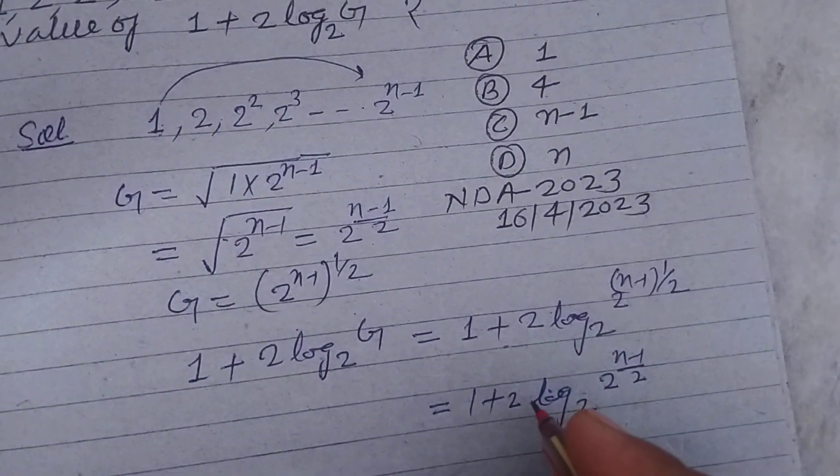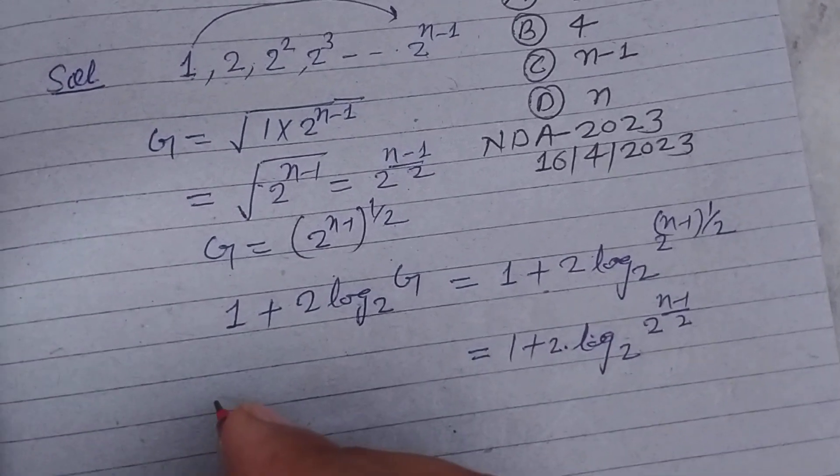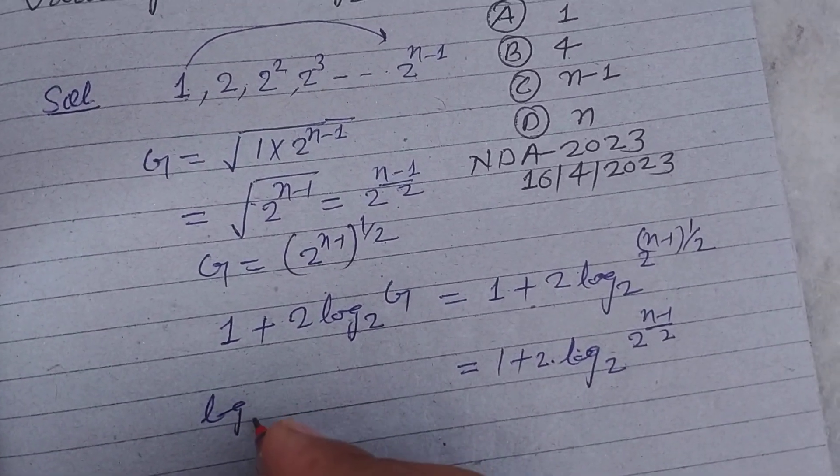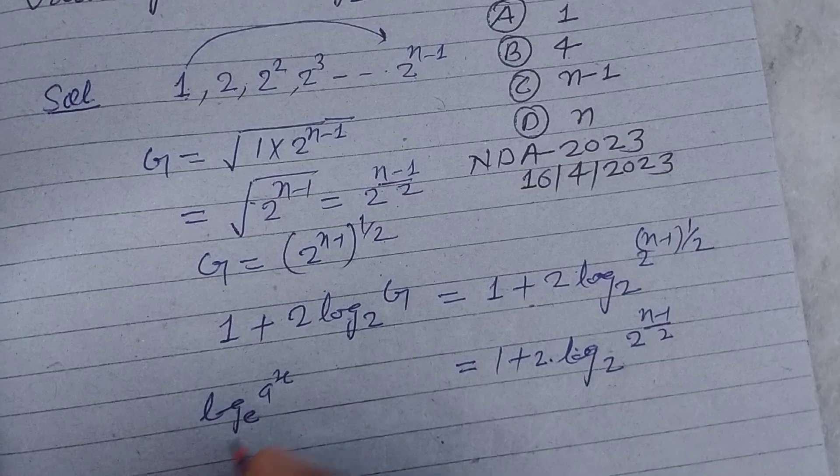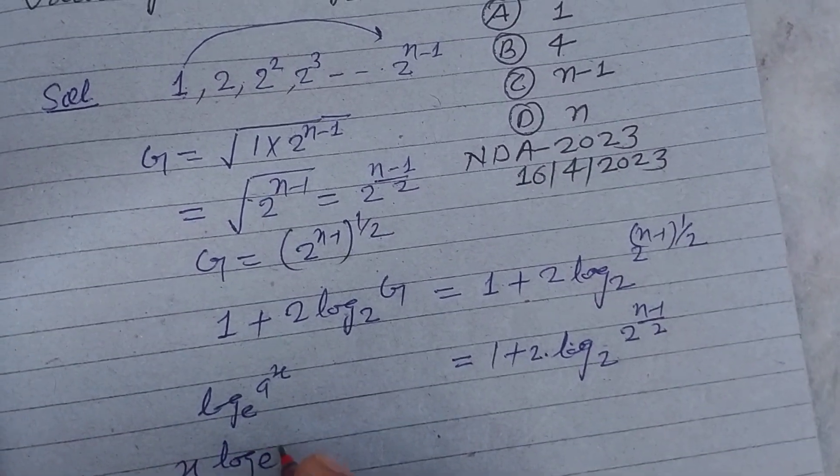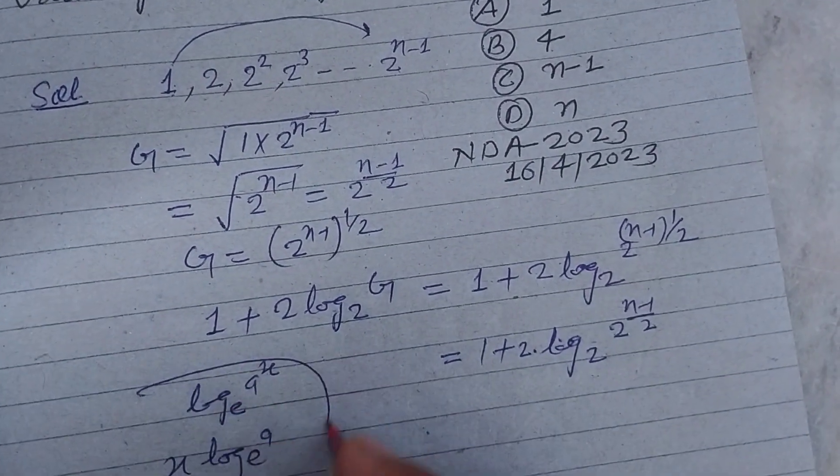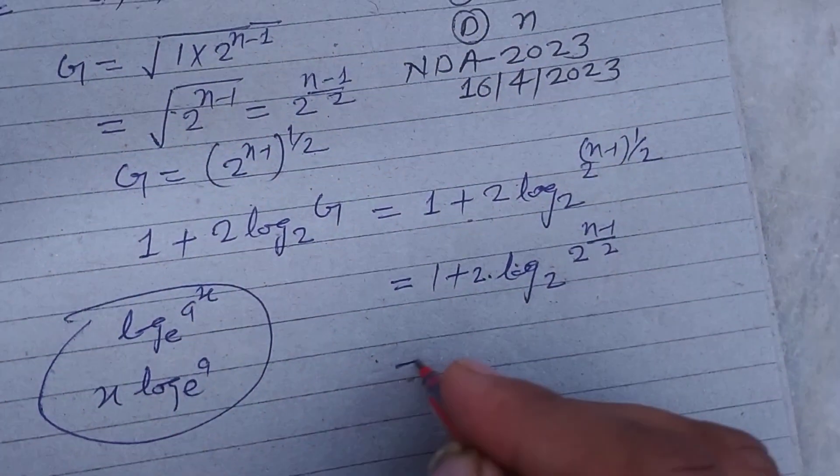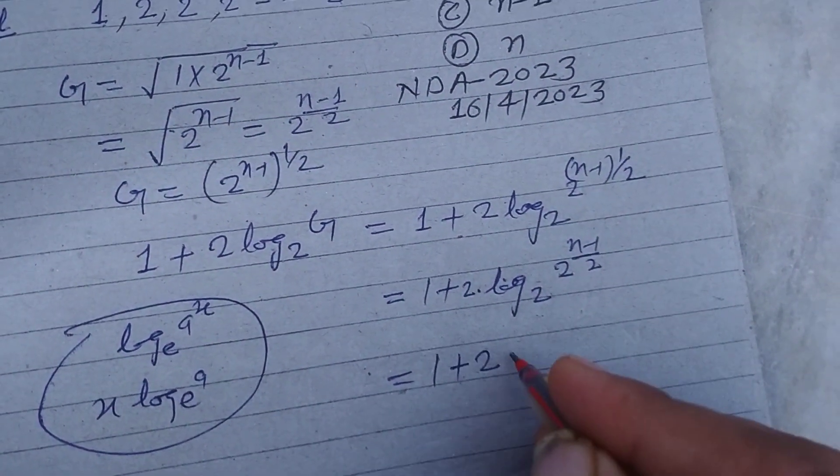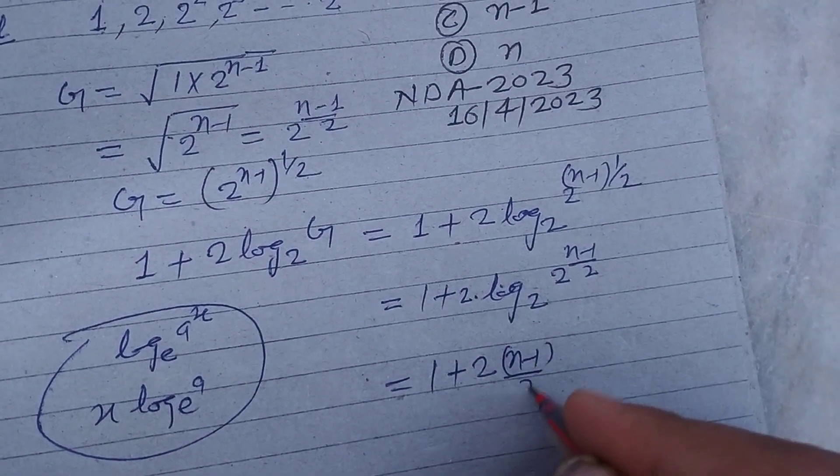Or we write 1 plus 2 log 2 base 2 to the power n minus 1 by 2. So this power comes here by using the formula log base a of a to the power x equals x log base a of a. So here we write 1 plus 2 into n minus 1 by 2 log 2 base 2.